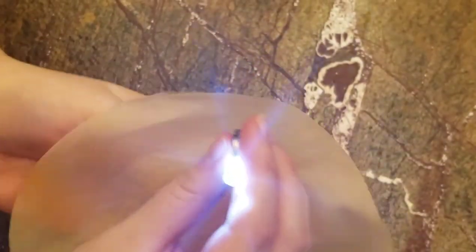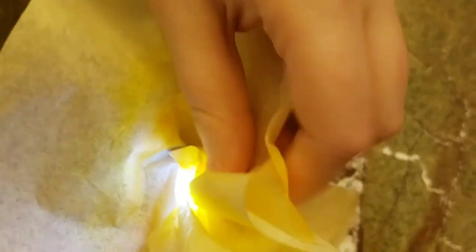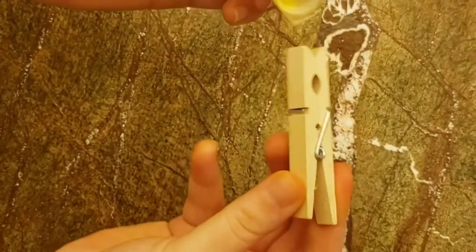Next, you want to pick up your coffee filter and slowly wrap it around the battery. Once you're done making the folds you like, take your clothespin and pinch it, and now you have your own LED flower.